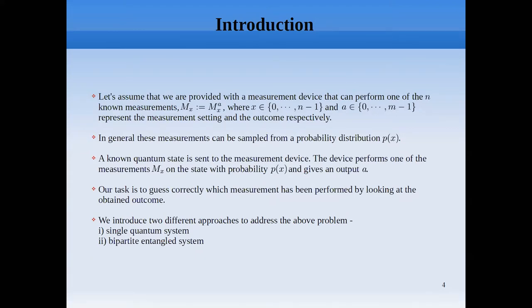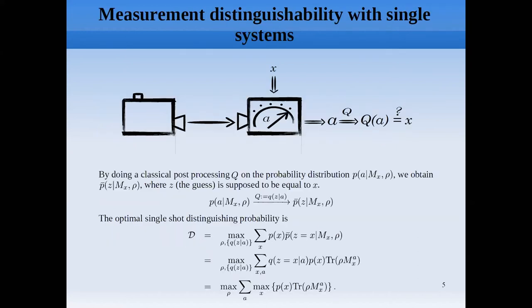To deal with this problem, we introduce two different approaches. The first is with a single quantum system, where measurements are performed on a single quantum system — which could be entangled with another system, but we do not have access to it. The second scenario is a bipartite entangled system, where the particle undergoing measurement is entangled with another system to which we have full access. This is a basic schematic of the single-shot measurement discrimination problem with a single system.